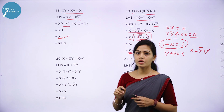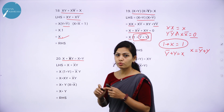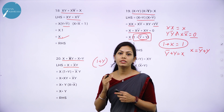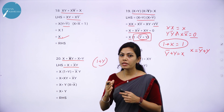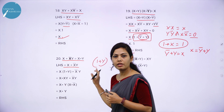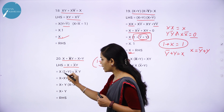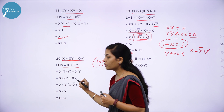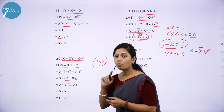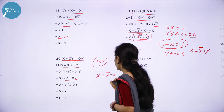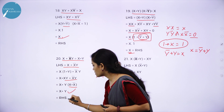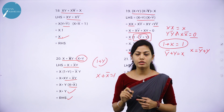Theorem 20: x + x̅y = x + y. LHS is x + x̅y. To simplify, multiply x by (1 + y): x(1 + y) = x since 1 + y = 1. Expanding x(1 + y) gives x + xy + x̅y. Taking y as a common factor from xy + x̅y gives y(x + x̅) = y·1 = y. So you get x + y, which is your RHS. LHS equals RHS.